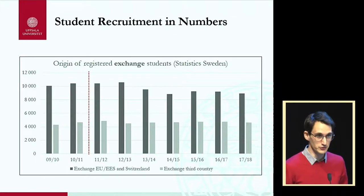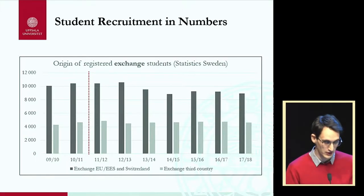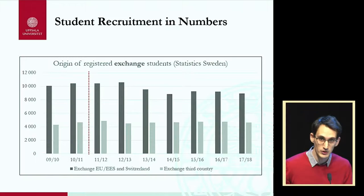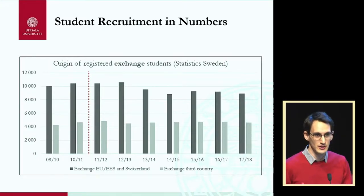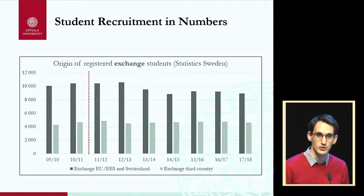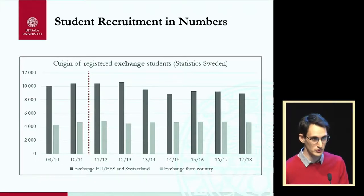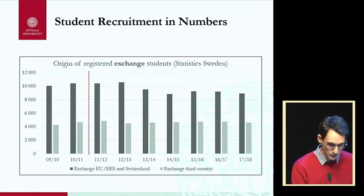Exchange student flows are very different from free mover flows in terms of country of origin — they're much more dominated by EU and EEA countries. Flows from third countries often come from North America, Oceania, and some countries in East Asia, rarely from developing countries. Because exchange is reciprocal — you're supposed to send Swedish students somewhere too — and they may not be keen to go to developing countries, so students from those regions essentially can only come to Sweden as free mover students.